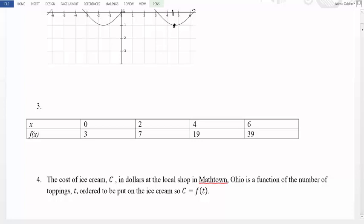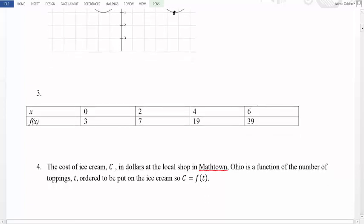Finally, we can look at functional relationships through descriptions. Sometimes we have words that describe what the relationship is. If we're lucky, that description will allow us to come up with a formula like we saw in number one, but sometimes it's just a general idea of how two things are related.